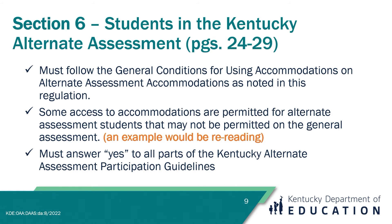Students participating in the Kentucky Alternate Assessment are expected to follow the same guidelines for use of accommodations. However, there are a couple of instances that would not be appropriate for students taking the regular assessment. Students are permitted to have a reader on both the regular and alternate assessments; however, the ability to reread is where the difference applies. On the regular assessment, a student must request a reread. On the alternate assessment, if the test administrator observes the student to be unengaged or distracted, they may reread to the student. Another example involves manipulatives, discussed on slides 31 and 32. To qualify for the Kentucky Alternate Assessment, the ARC or IEP team must answer yes to all parts of the Kentucky Alternate Assessment participation guidelines. If a no is determined at any point, the student would not qualify. A direct link to those participation guidelines can be found in the notes section of this slide.